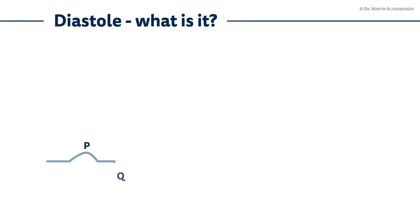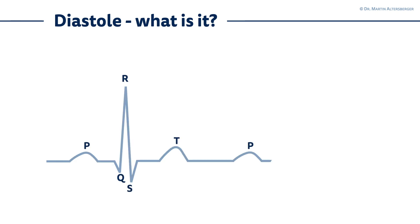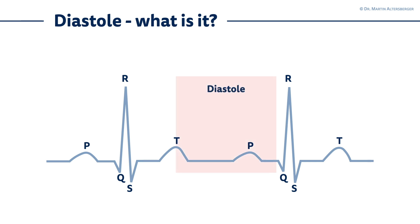Now we have to continue and understand what diastole actually is. Here you see an ECG and there's the P-wave, the QRS complex, the T-wave and the next P-wave and next QRS complex. From the middle of the T-wave to the P-wave, this is diastole.